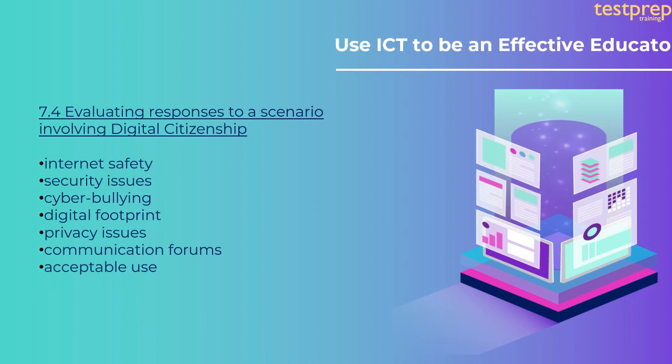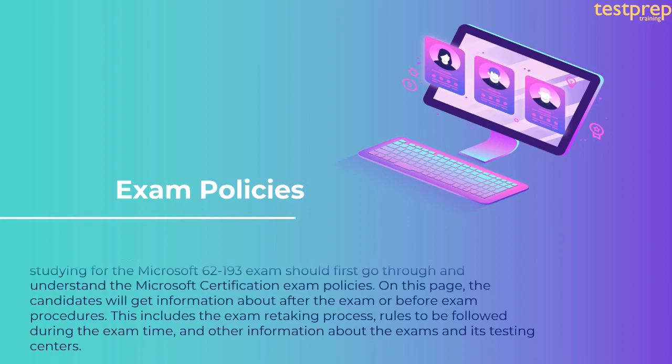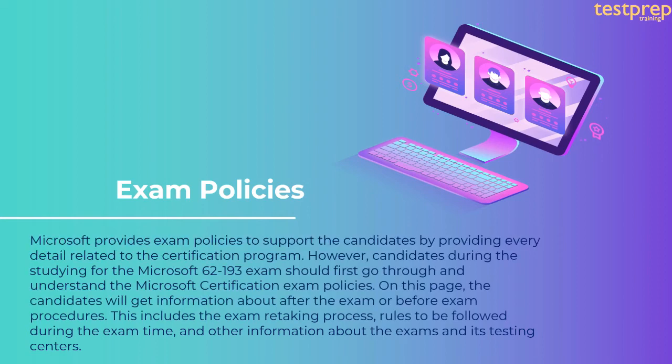7.3 selecting an appropriate ICT resource to reach a professional development goal — improving productivity and time management skills. 7.4 evaluating responses to a scenario involving digital citizenship, including: internet safety, security issues, cyber bullying, digital footprint, privacy issues, communication forums, and acceptable use.